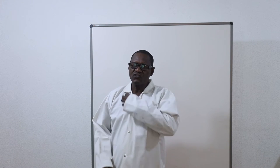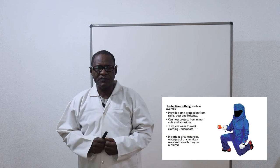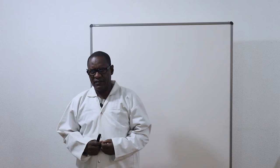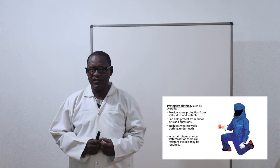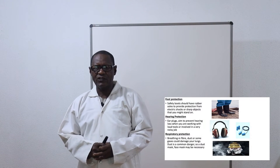Protective clothing such as overalls provide some protection from spills, dust, and irritants, and can also help protect from minor cuts and abrasions. They reduce wear to work clothing underneath. In certain circumstances, waterproof or chemical-resistant overalls may be required. Foot protection: safety boots should have rubber soles to provide protection from electric shocks or sharp objects that you might stand on.